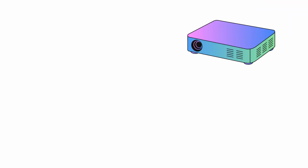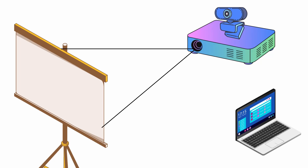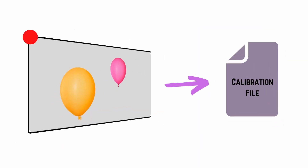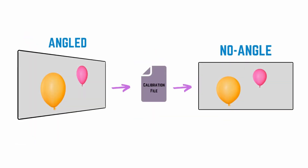In order to use our ball at the hit point, we needed to know where the projector is projecting. To get the complete area of the projection and remove any angles that might be in the camera feed, I created a calibration script. This script only needs to run once when the camera is fixed for the first time.